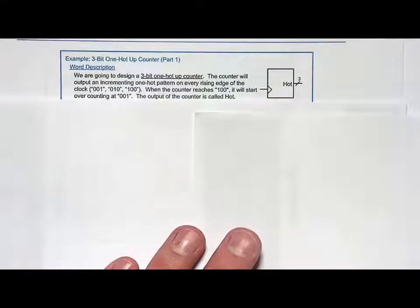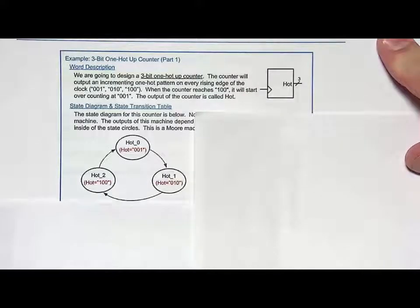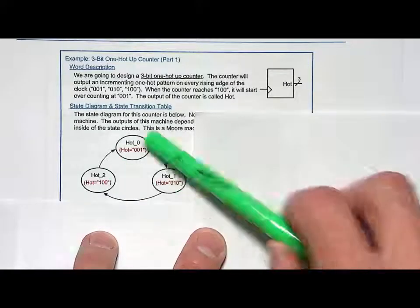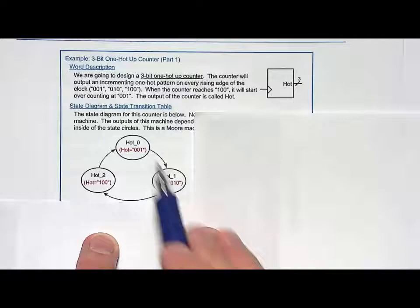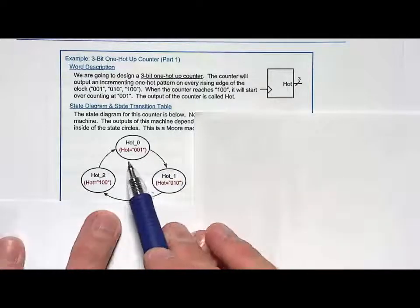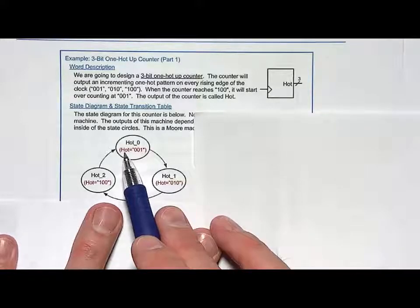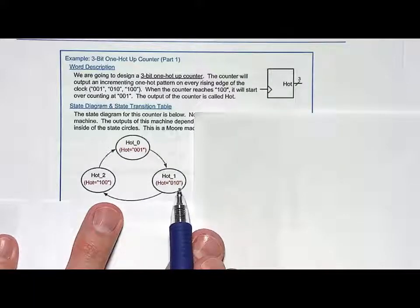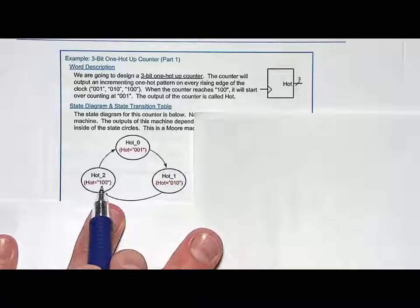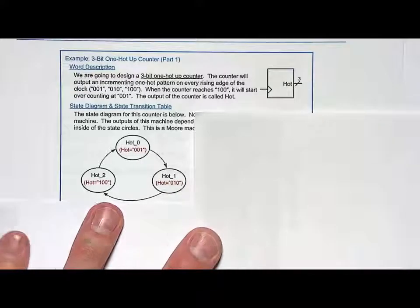Let's go ahead and do the state diagram. This is a counter, so we can put three states in our state diagram, each state responsible for producing the output code. I'm going to call the three states hot0, hot1, and hot2. In hot0, the output 'hot' is 001. When in hot1, hot is 010. When in hot2, hot output is 100. And all we do is traverse around. So we have three states cycling, producing this three-bit output.